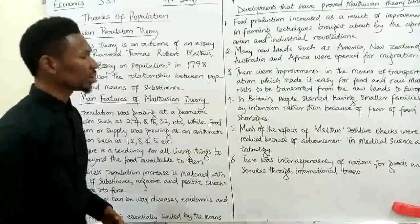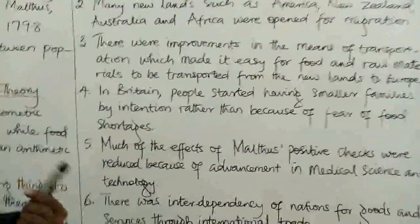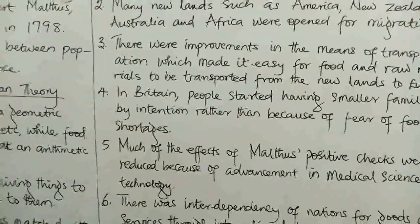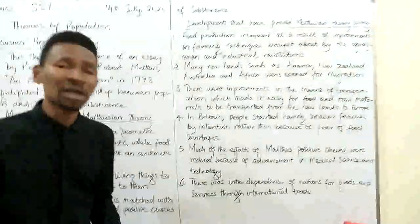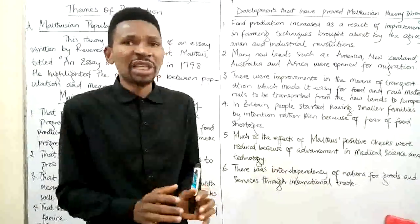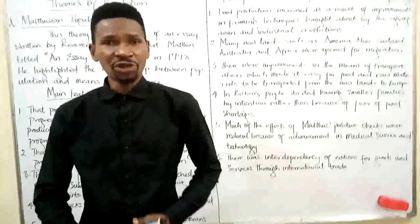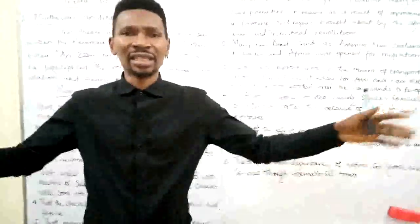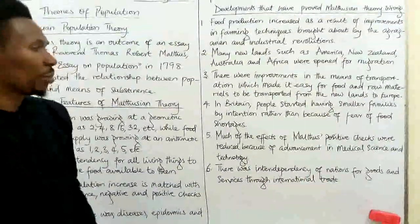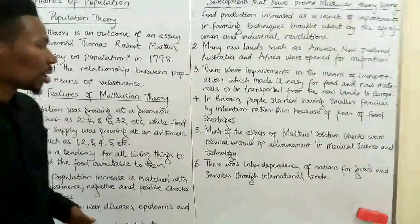Number four, in Britain for instance, people started having smaller families intentionally — not because they were afraid of food shortages, but because having a small family size of two or three children became fashionable. People would no longer fancy large families as it were in times past. So this refuted Malthusian theories on population.